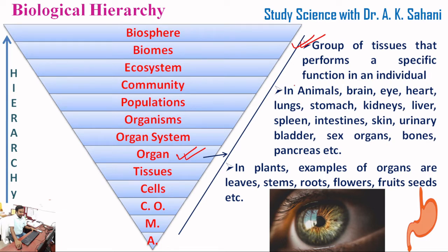In animals, examples of organs include the brain, eye, heart, lungs, stomach, kidneys, liver, spleen, intestines, skin, urinary bladder, sex organs, bones, pancreas, etc. In the case of plants, examples of organs are leaves, stems, roots, flowers, fruits, seeds, etc.